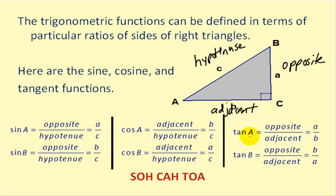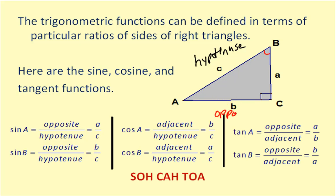Tangent of angle A would be the ratio of the opposite side over the adjacent side, so here we'd have A over B. Now looking at the second row, notice that we refer to angle B, which is going to change the orientation of the opposite and adjacent sides. Regardless of what angle we refer to, the ratio is always the same: sine is opposite over hypotenuse, cosine is adjacent over hypotenuse, and tangent is always opposite over adjacent.